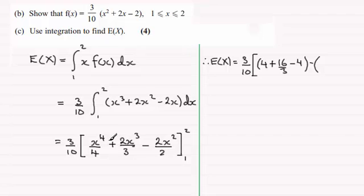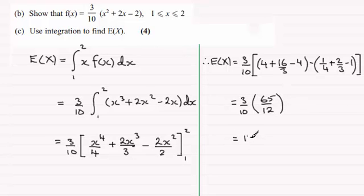And then it's going to be minus, and if we put the 1 through, we're going to get a quarter here, then plus 2 thirds, and then minus 1. Working this out, we're just going to have 3 tenths at the front, and that's going to be multiplied by, in fact if you work that on the calculator, it comes to 65 over 12, and cleaning this up you'll end up with 13 over 8.